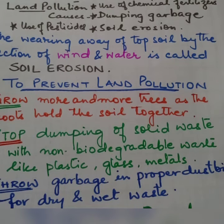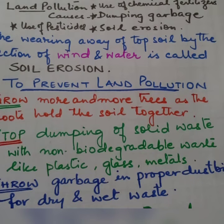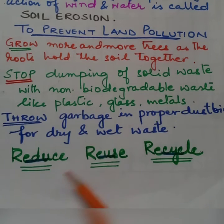अपना कचरा करना कम कर दें — Reduce, Reuse, Recycle। Reuse — यानि एक चीज़ को दुबारा से use करें। Recycle — जो चीज़ें दुबारा direct use नहीं किया जा सकता, उसको recycle कर लें, जैसे plastics को पिघला कर दुबारा से plastic की चीज़ें बन सकते हैं, metals को भी melt करके दुबारा से reshape किया जा सकता है। Dry waste को अलग रखके paper को recycle किया जा सकता है, उसे factories में भेज दें।